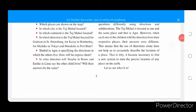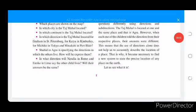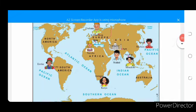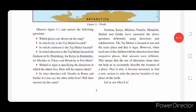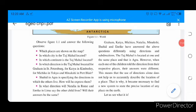Point 4: In which direction is the Taj Mahal located for Michiko in Tokyo and Minakshi in Port Blair? Point 5: Shahid in Agra is specifying the direction in which the others live. How will he express them? Point 6: In which direction will Natalia in Rome and Enric in Lima say the other children live? Will their answers be the same?